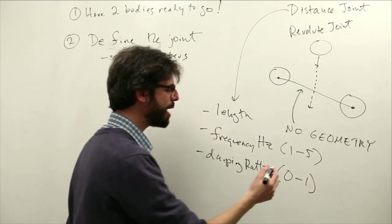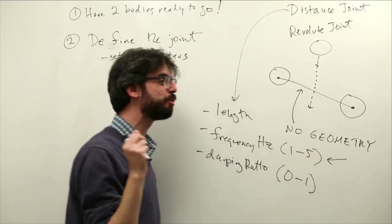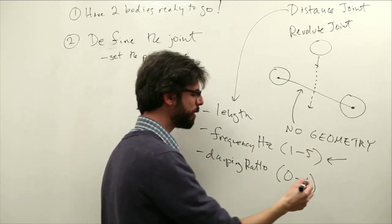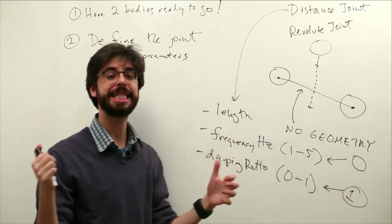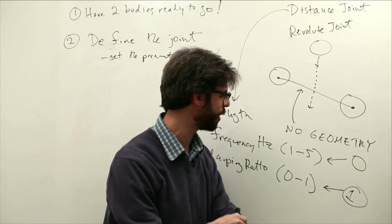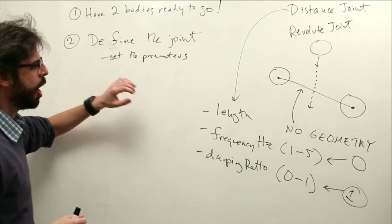Okay, so by the way, if you wanted a completely rigid distance joint, you would make the frequency Hertz value zero and the damping ratio one. So that would be complete damping and no oscillation whatsoever.